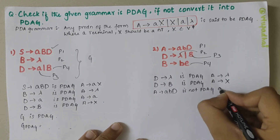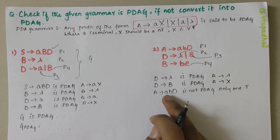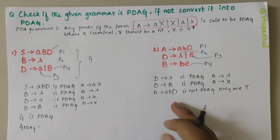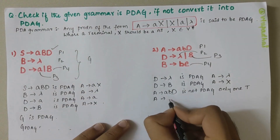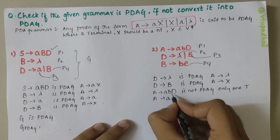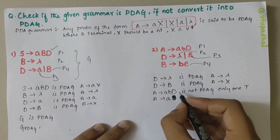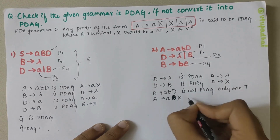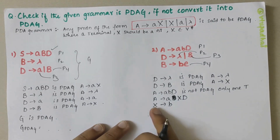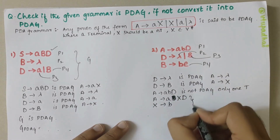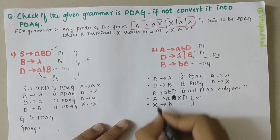A derives ABD is not PDAG because there has to be only one terminal at the start followed by non-terminals. So we take A derives aX, and in place of B we write capital X, keeping D as is, and add X derives small 'b'. This condition is now satisfied.